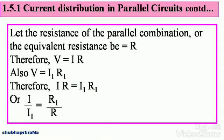Let the resistance of the parallel combination, or the equivalent resistance, be equal to R. Therefore, by Ohm's law, you know that V is equal to IR. Also, V equals I1 R1 because we know that voltage across parallel circuits is equal.